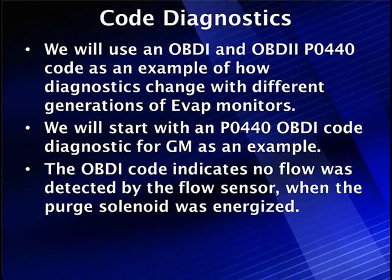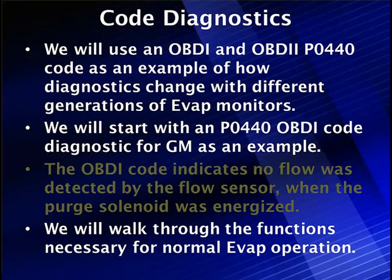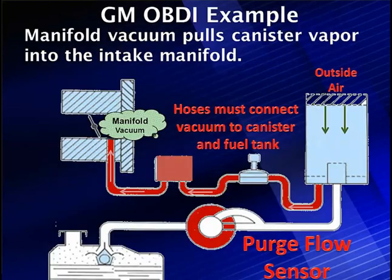This code indicates no flow was detected by the flow sensor when the purge solenoid was energized. It has a slightly different meaning for OBD-2. This is going to give us a chance to cover all of the basic functions we need to do with EVAP and how they function. We're going to walk through these functions to show what's necessary for normal EVAP operation and get around to testing this code P440 for OBD-1.